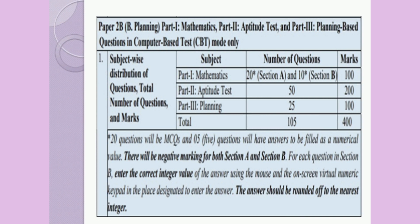Paper 2B, that is of Planning, comprises Part 1 Mathematics and Part 3 Planning for 100 marks each. Part 2 Aptitude Test section will be conducted out of 200 marks.